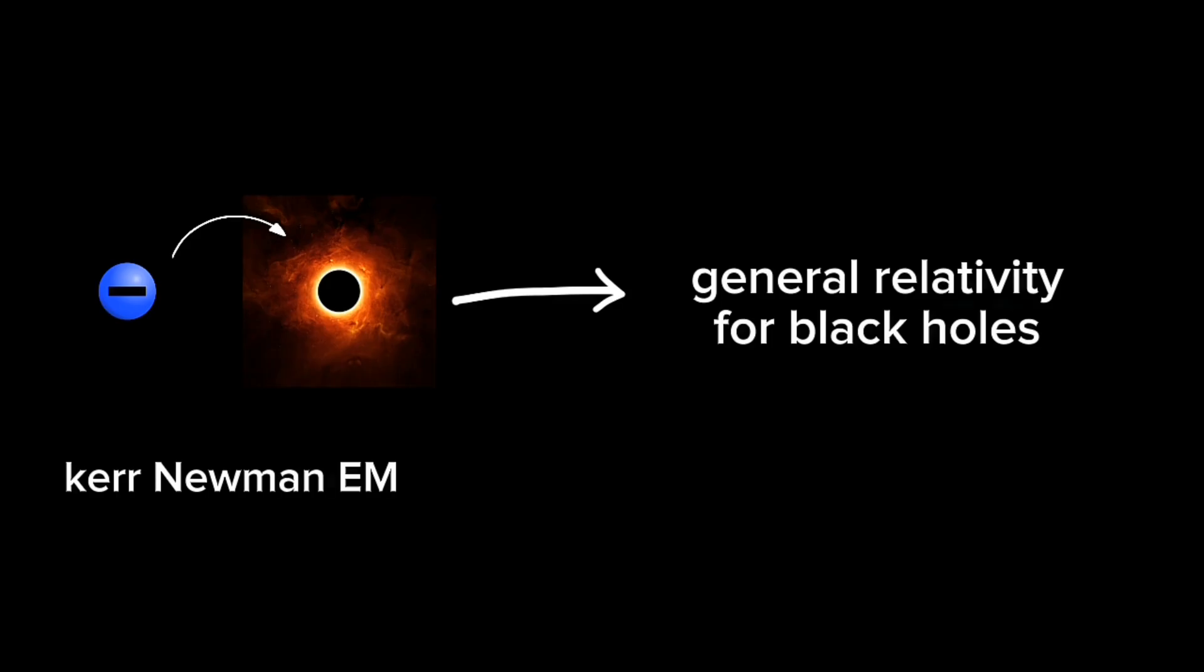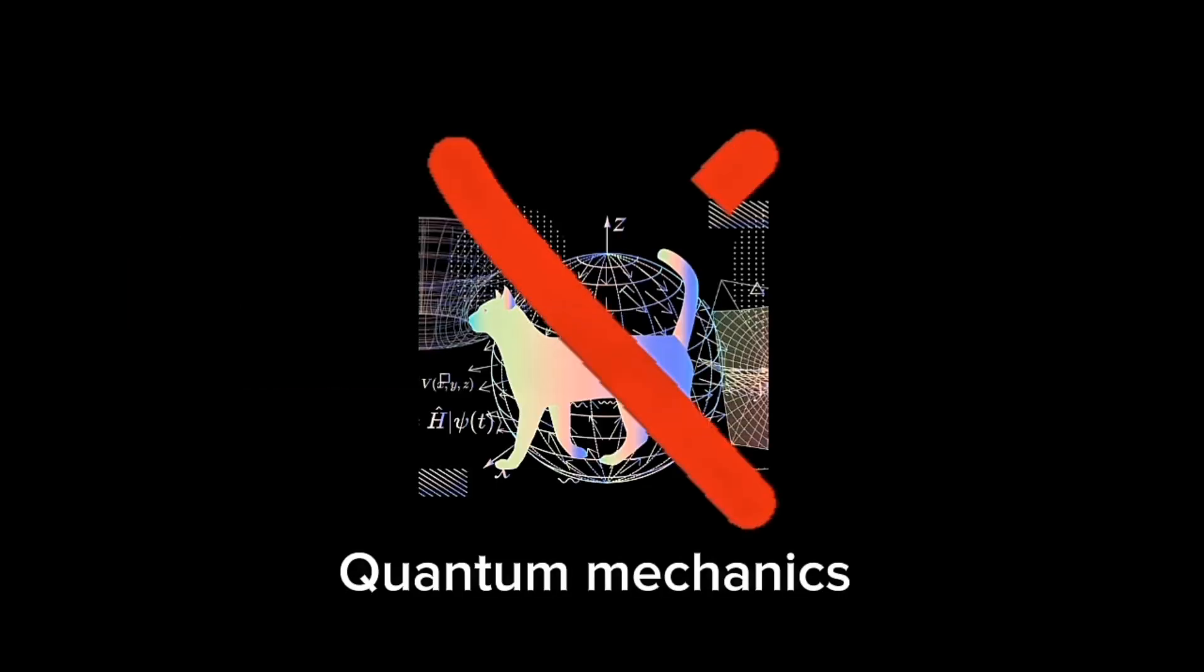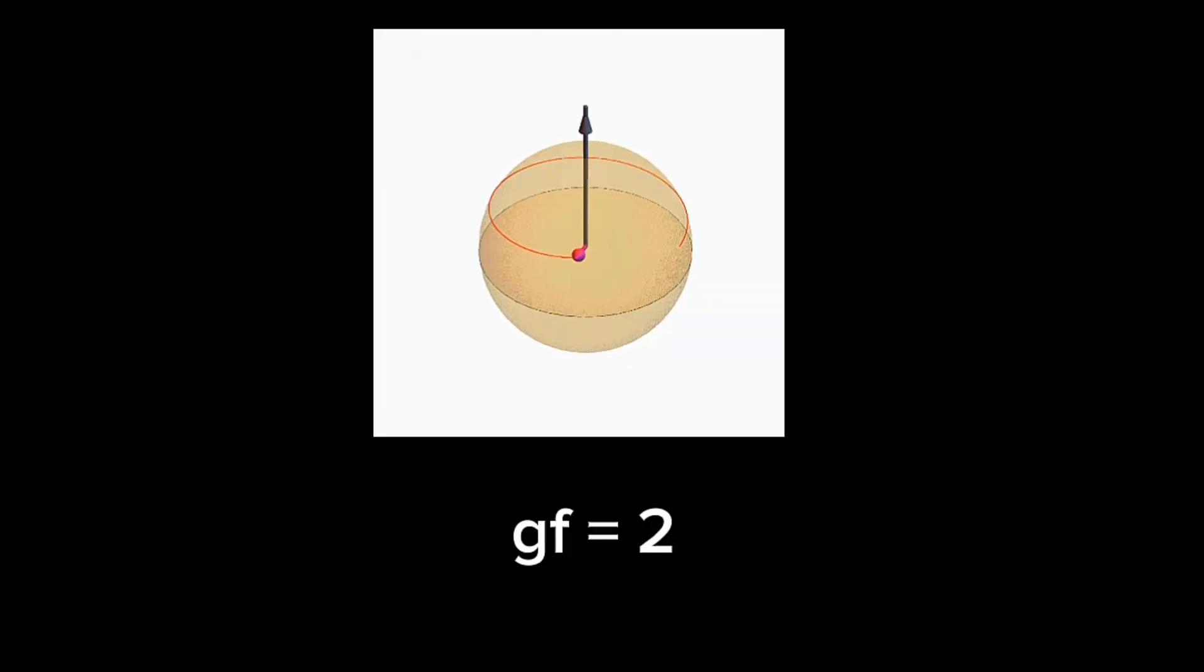Dirac relativistic quantum theory is a very different way to approach the value of the g-factor. It combines relativity and quantum mechanics together to produce this value. But the Kerr-Newman electron model is purely based on general relativity. It does not even incorporate quantum mechanics, yet it gives the exact value of two. The matching is really jaw-dropping. If you understand this, you couldn't sleep the whole night.